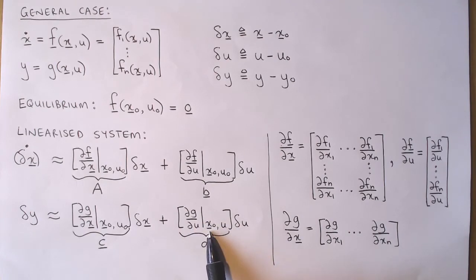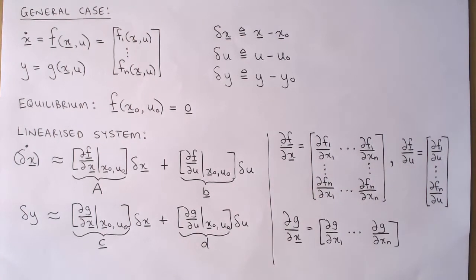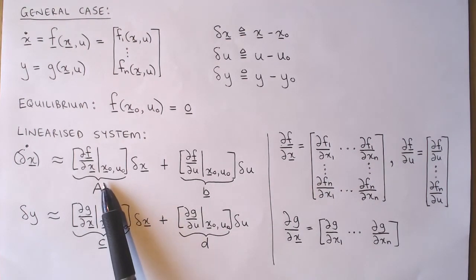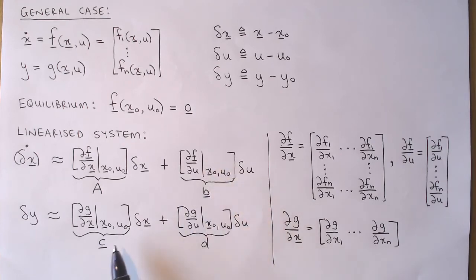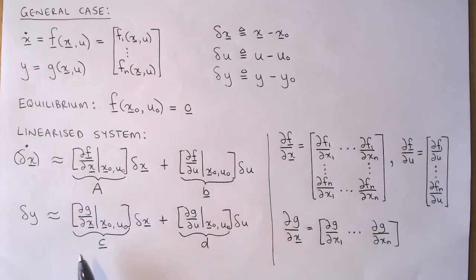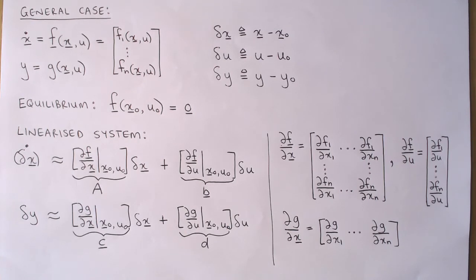This will be a matrix, a column vector, a row vector, and a scalar. And we call them A, B, C, and D. Let's look at the construction of these matrices in more detail.